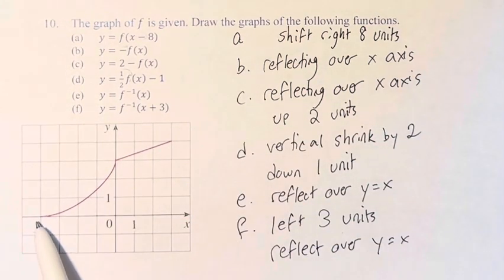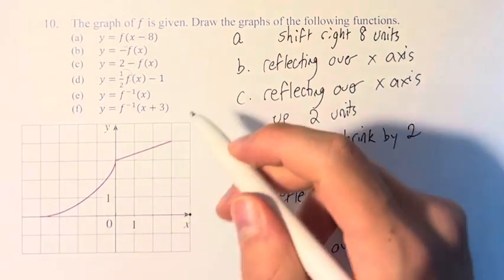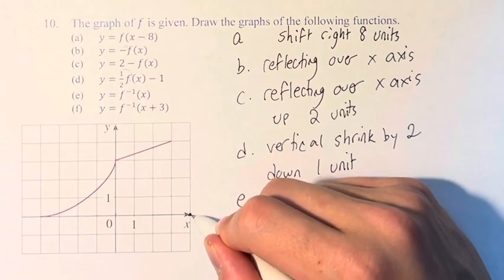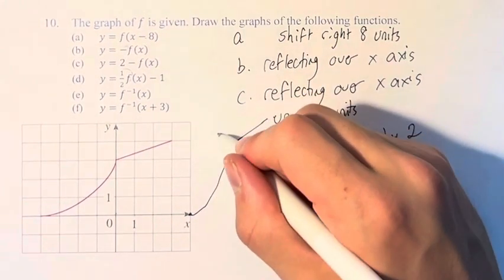This is going to get messy quickly, but we count 1, 2, 3, 4, 5, 6, 7, 8 as the starting point. And then the regular shape of the function continues. I'm sort of running out of space, so it's not perfect, but that's basically what happens. This is graph A.